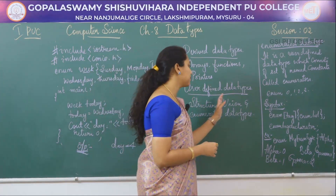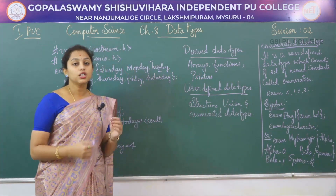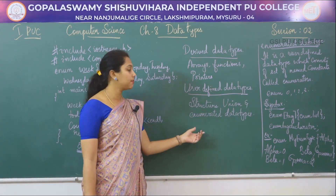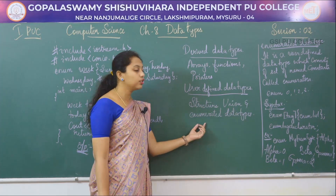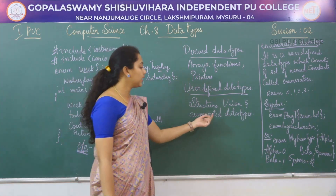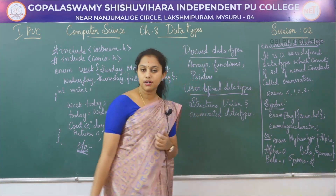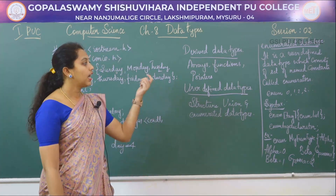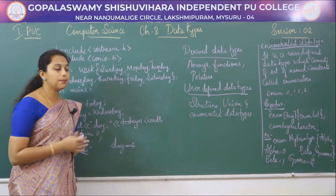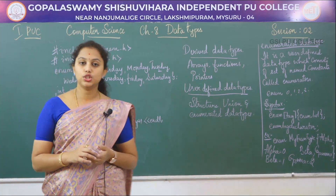User-defined data types are data types defined by the user and also derived from simple data types; some examples are structures, unions, and enumerated data types. In this chapter we studied only the enumerated data type, which is a user-defined data type consisting of a set of named constants called enumerators.